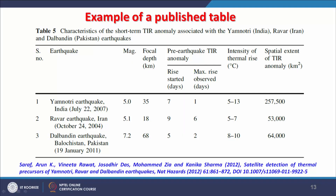Another example from the same publication shows thermal infrared anomaly data, including magnitude, focal depth, and pre-earthquake rise. The same earthquakes are listed, and the title or caption also contains full details. This is the best way of showing data in the form of tables.